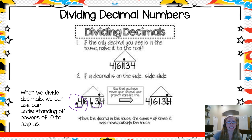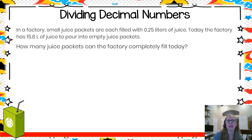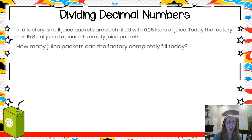Let's see this in action with a problem and work through one together. In a factory, small juice packets are filled with 25 hundredths liters of juice. Today the factory has 15 and eight tenths liters of juice to pour into empty juice packets. How many juice packets can the factory fill completely today?